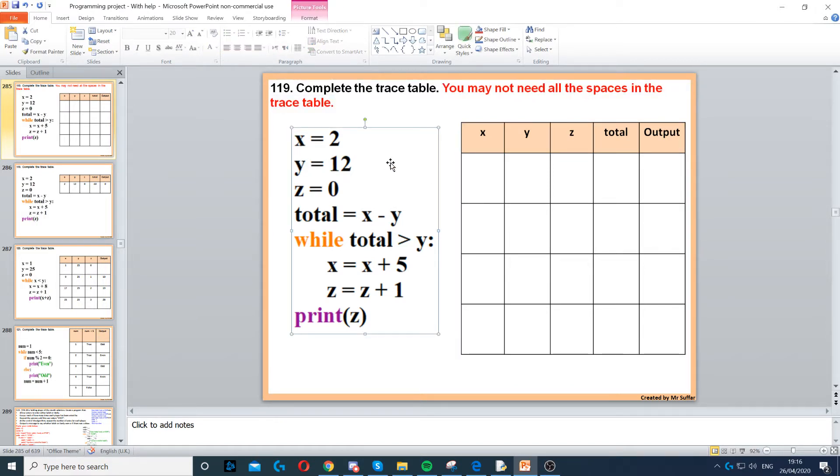We got x equals 2 in the question, so we put x as 2. Y equals 12, we set y to 12. Then, we've got z equals 0, so we put 0 in z.